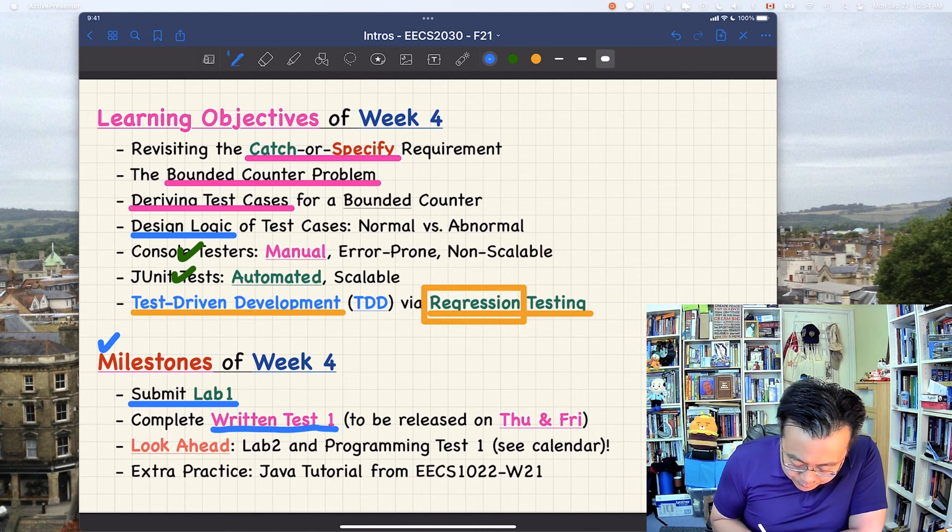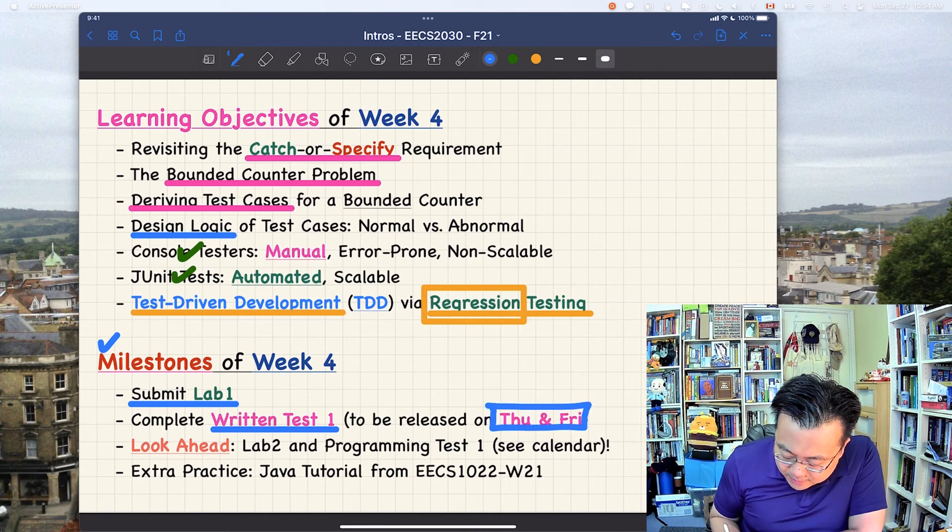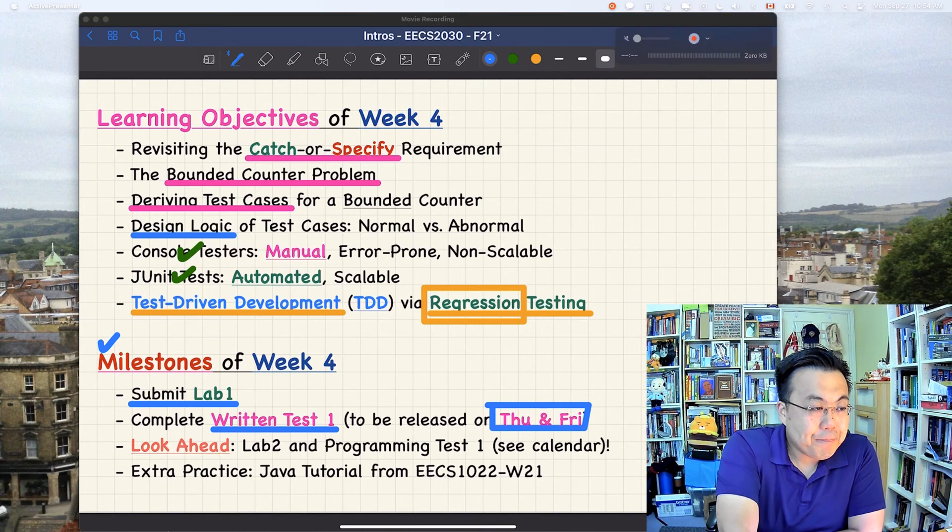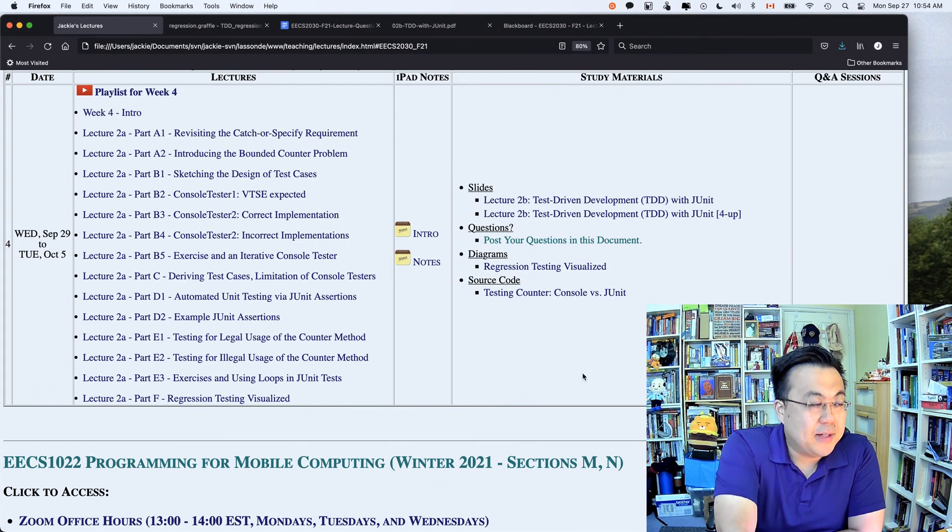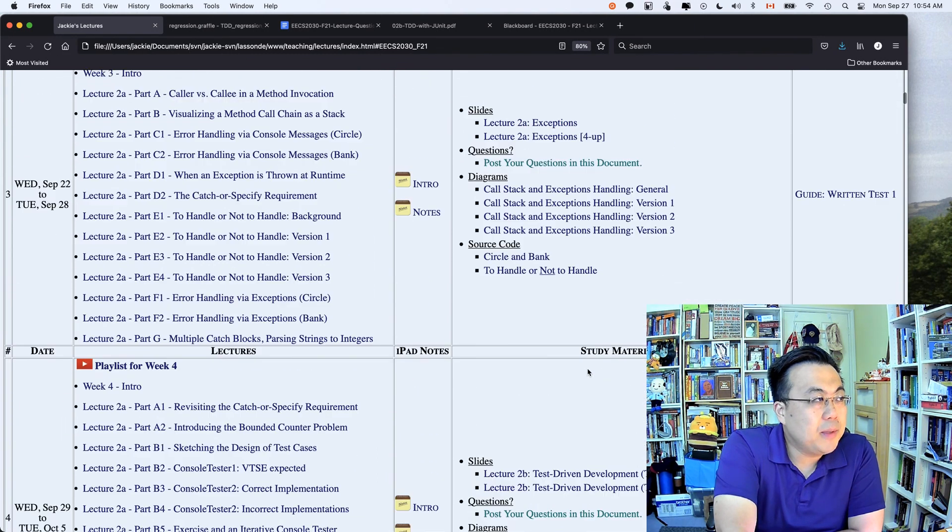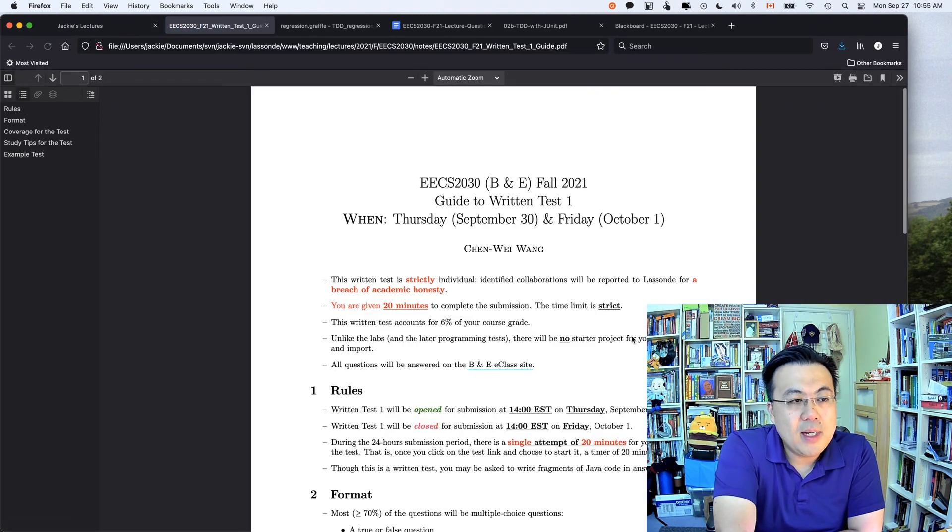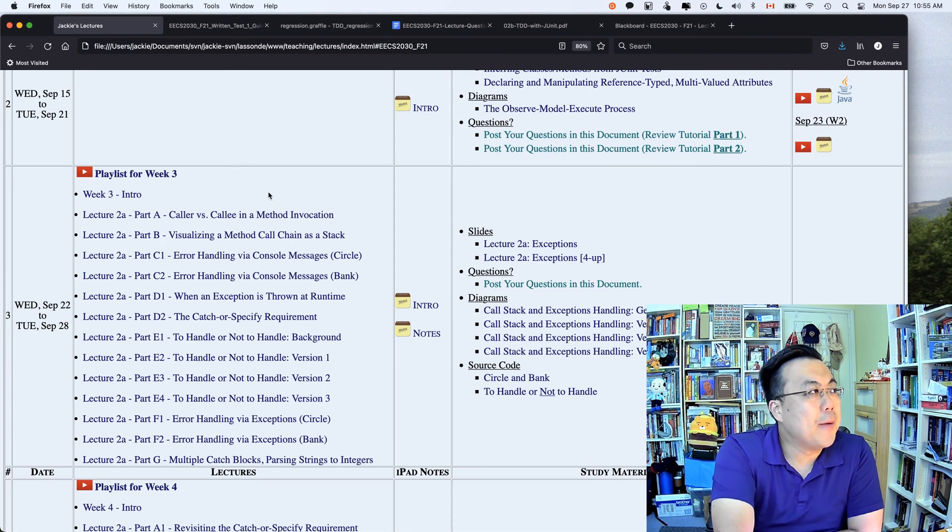So we also got our written test one. It's going to be open for a 24 hour period between Thursday and Friday. For those of you who haven't really looked at the guide for written test one, you can simply go back to week number three. And then there's a guide over here for written test one. If you click on that, so that talks about the coverage and policies for the written test. And also there are some practice questions on the E-Class, which has been released since last Thursday for almost a week already. So you should really take a look.